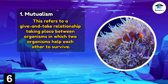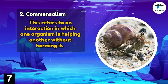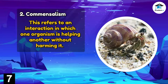Commensalism refers to an interaction in which one organism is helped by another without harming it. An example is the hermit crab and sea anemone, where the hermit crab lives among and is unaffected by the stinging tentacles of the sea anemone. The hermit crab receives protection while the sea anemone does not benefit or is affected.